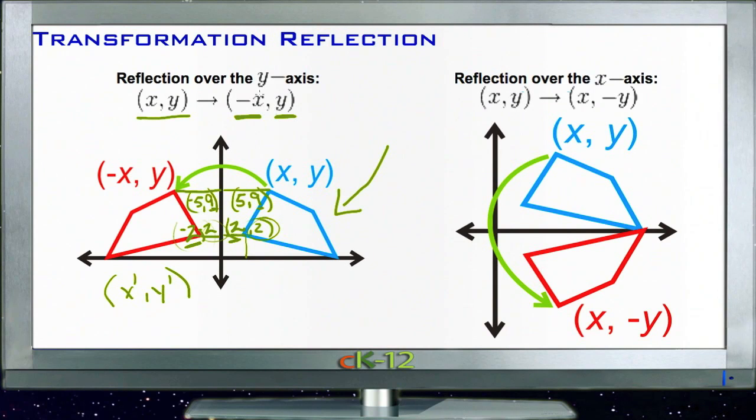For the x-axis, we change the y-coordinate. Now the x-coordinate stays the same while the y-coordinate becomes negative. For example, if this point is (9, 5), then the reflected coordinate would be (9, -5). The x-coordinate stays the same and the y-coordinate changes sign.